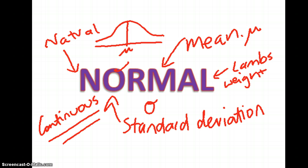Remember the bell curve — an example is like the weights of newborn limbs. It's continuous data, but sometimes you might have a continuity correction for rounded data.